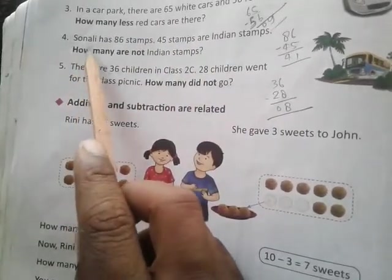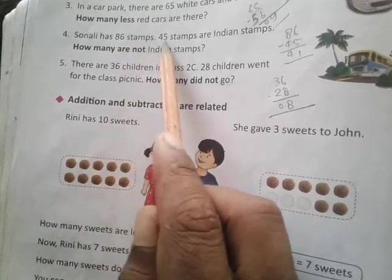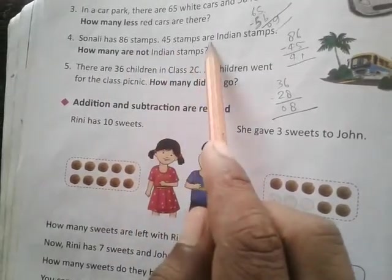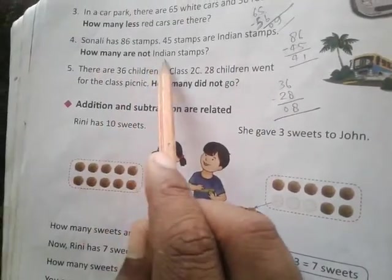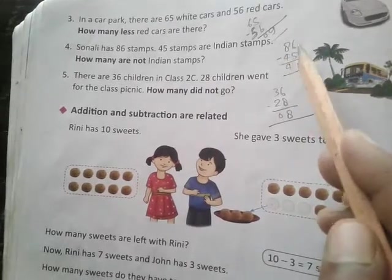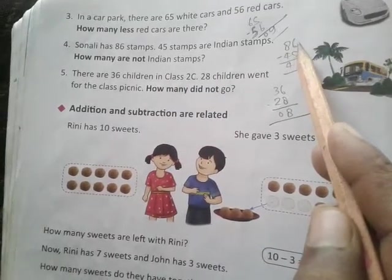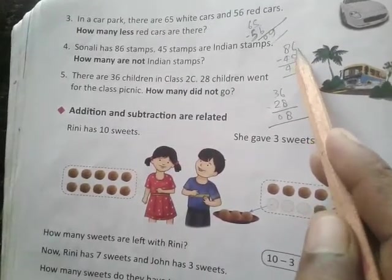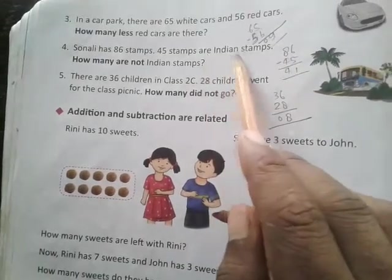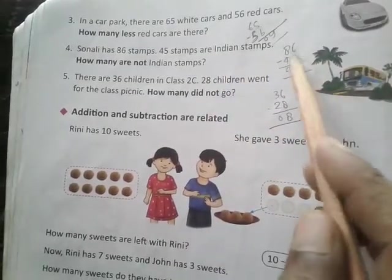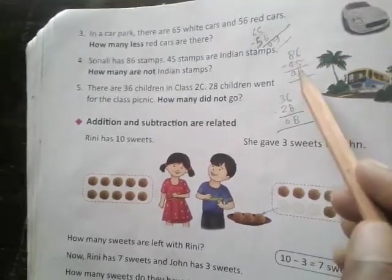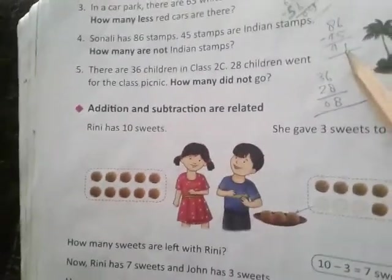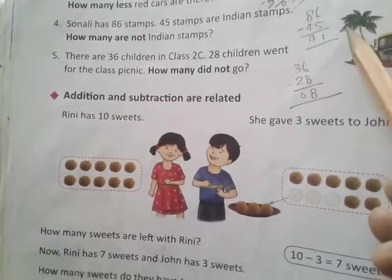Question 4. Sonali has 86 stamps. 45 stamps are Indian stamps. How many are not Indian stamps? 86 subtract 45. 16 subtract 5 is 1, 8 subtract 4 is 4, equals 41. 41 are not Indian stamps.